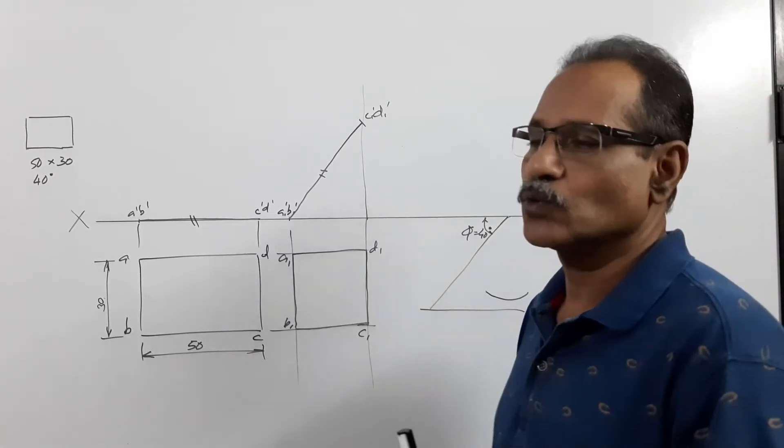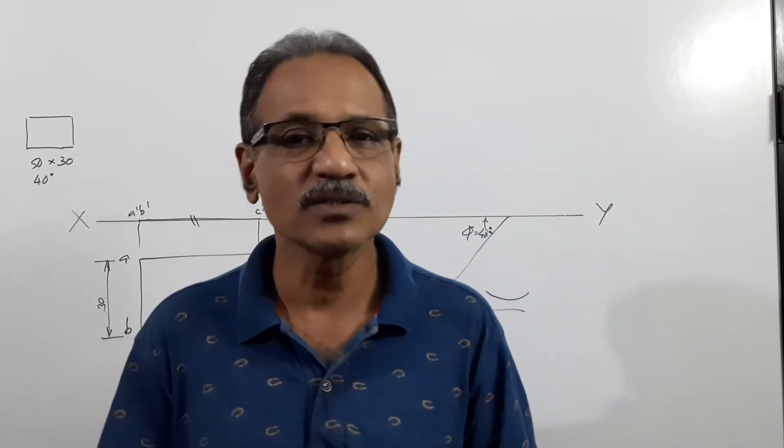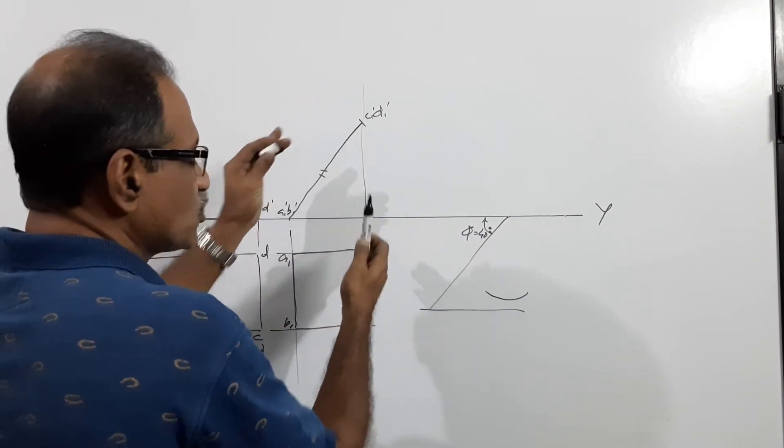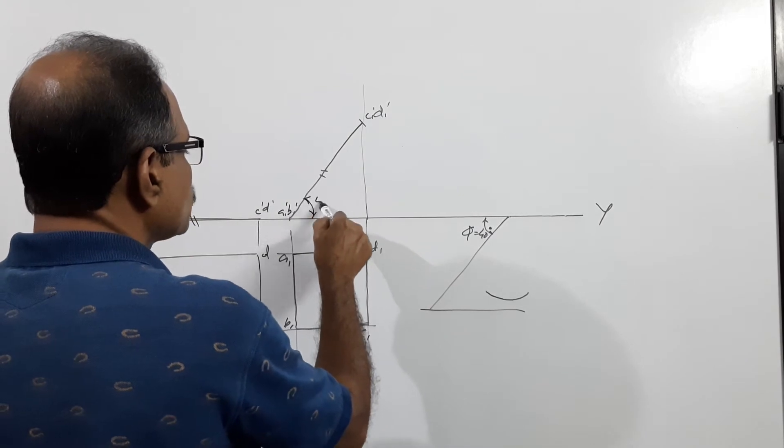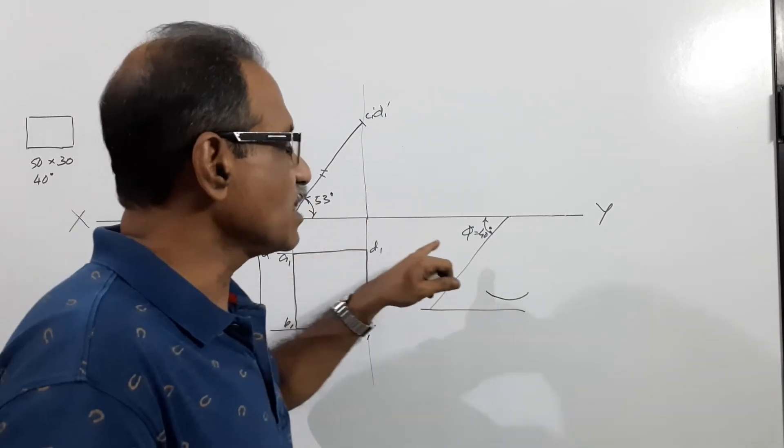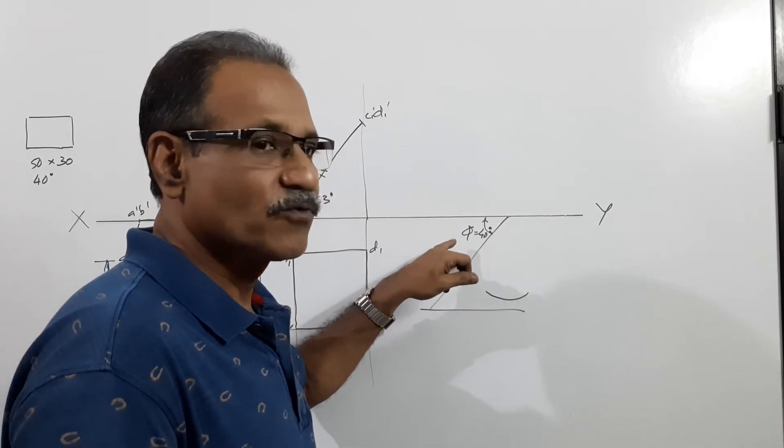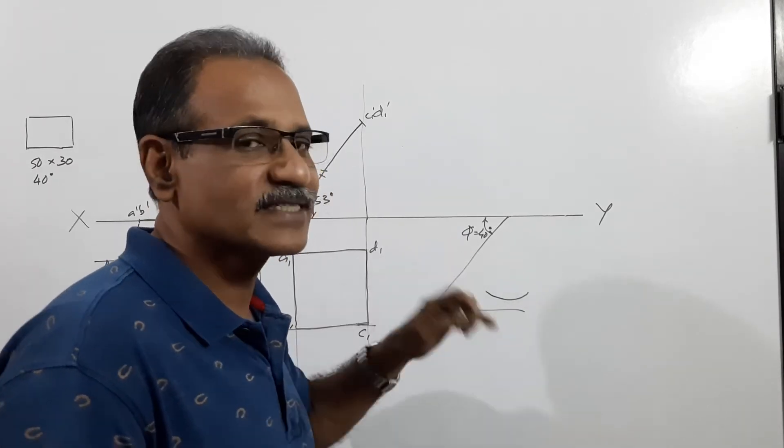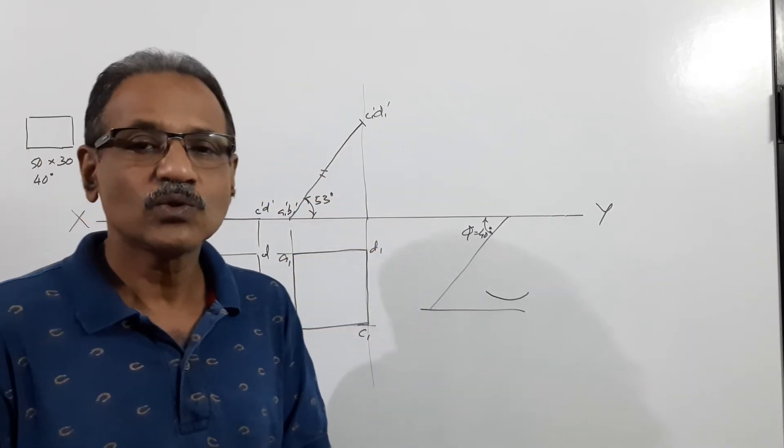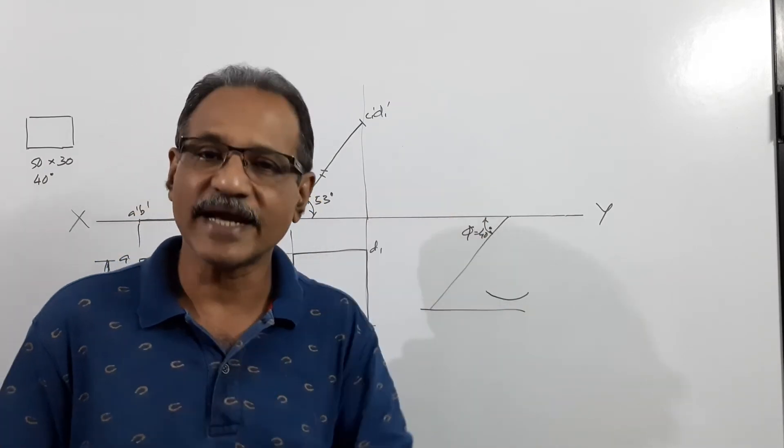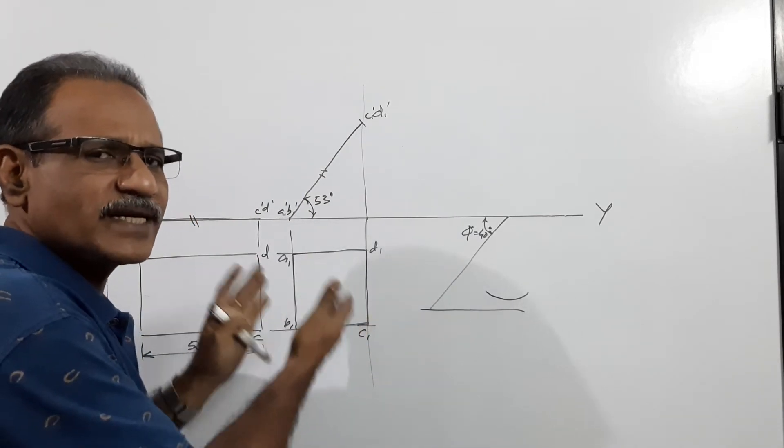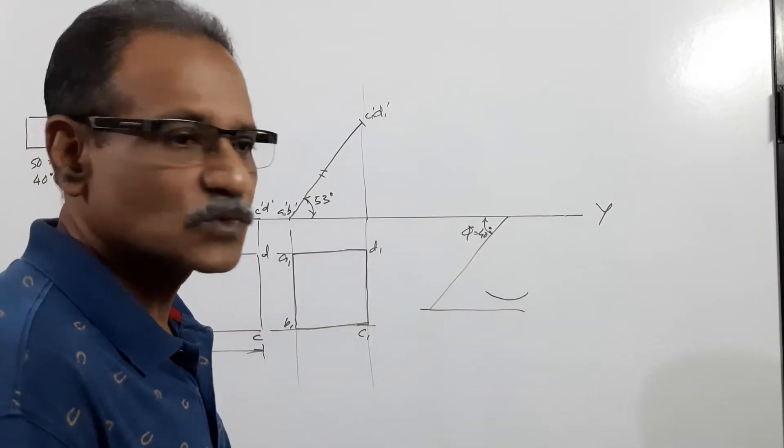Why is that wrong? That is wrong because when the lamina makes an inclination to HP so that the plan is a square, this angle comes to about 53 degrees. If this is 53 degrees, the maximum permissible angle for this phi is 37 degrees. 53 plus 37 is equal to 90. Theta plus phi cannot be more than 90. That is the problem.